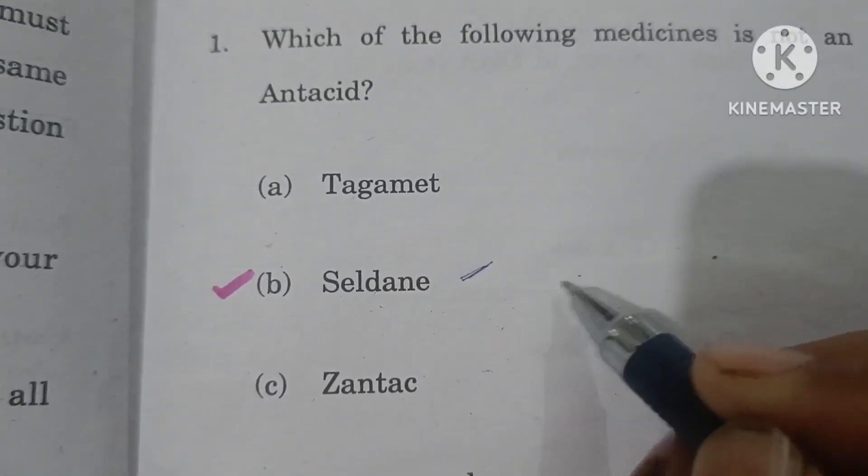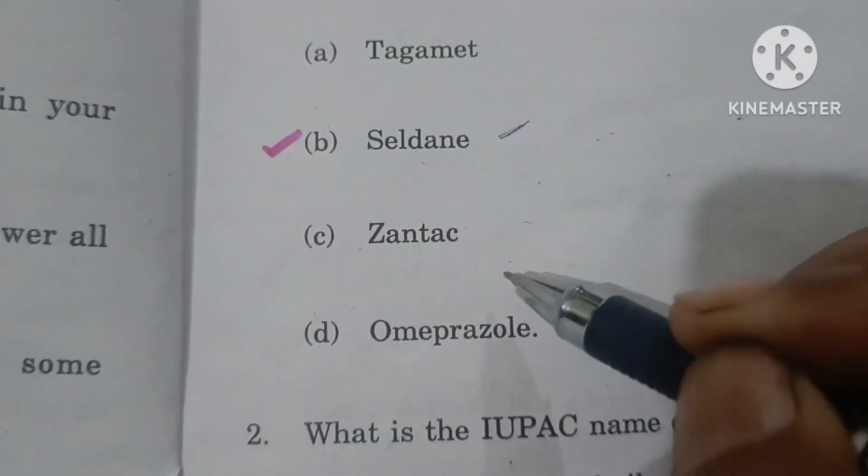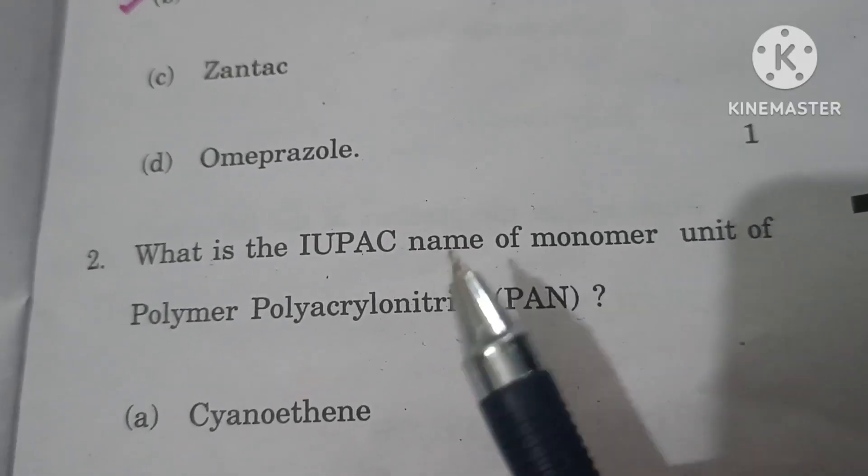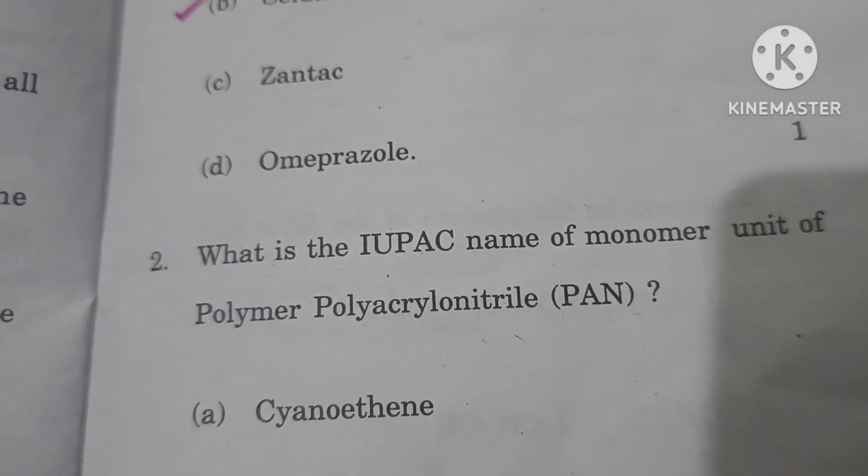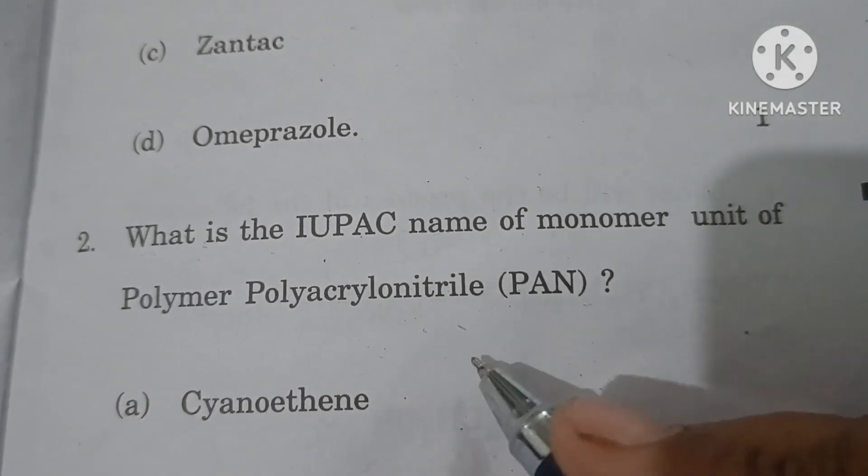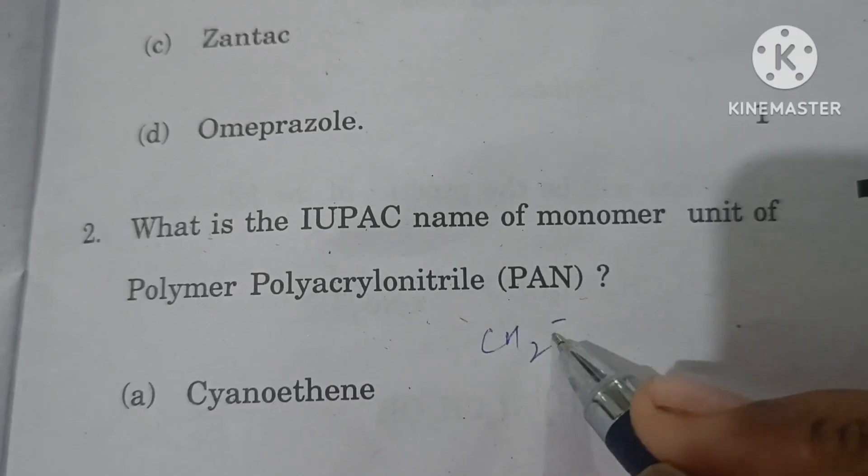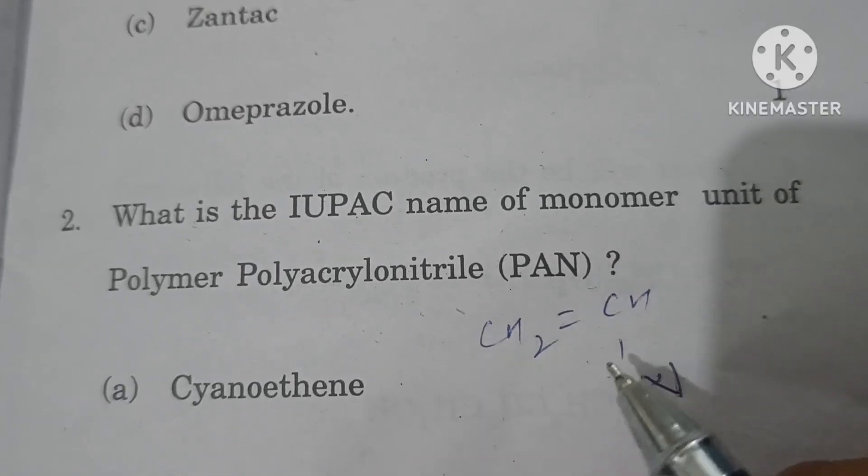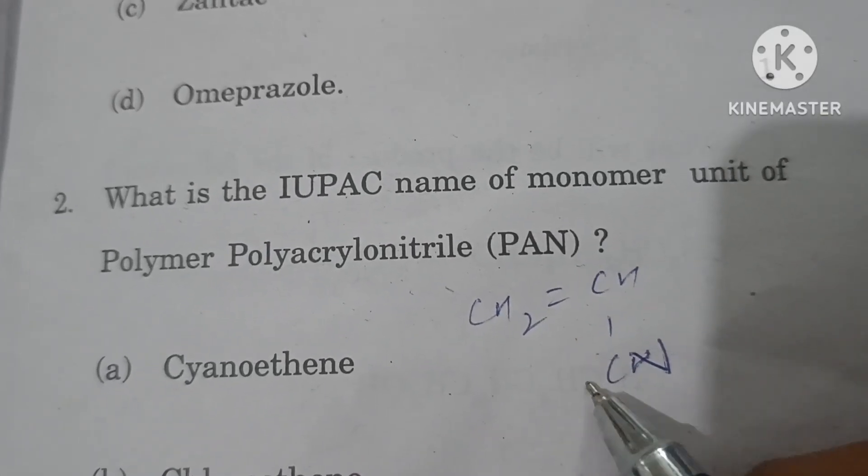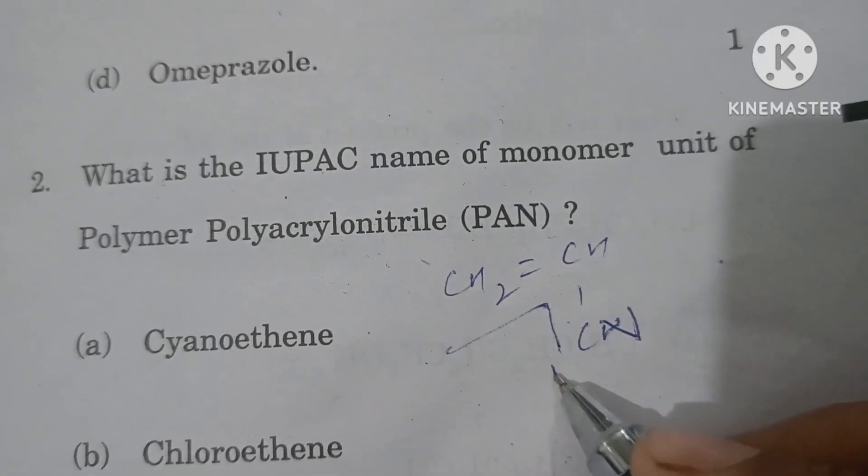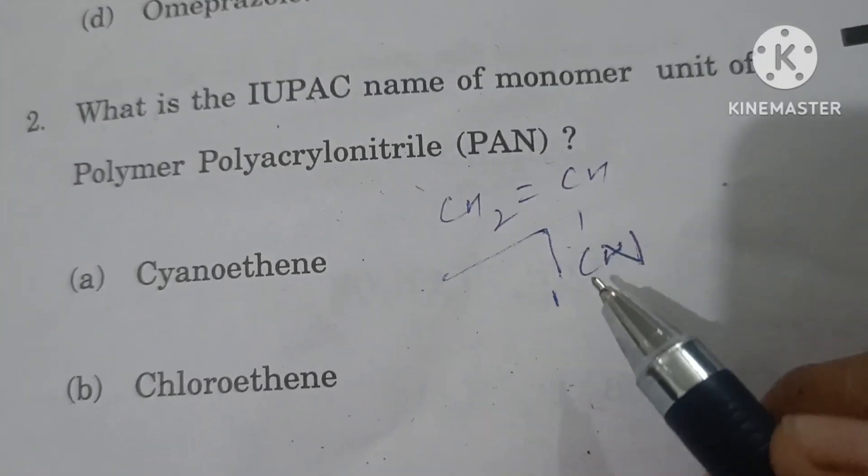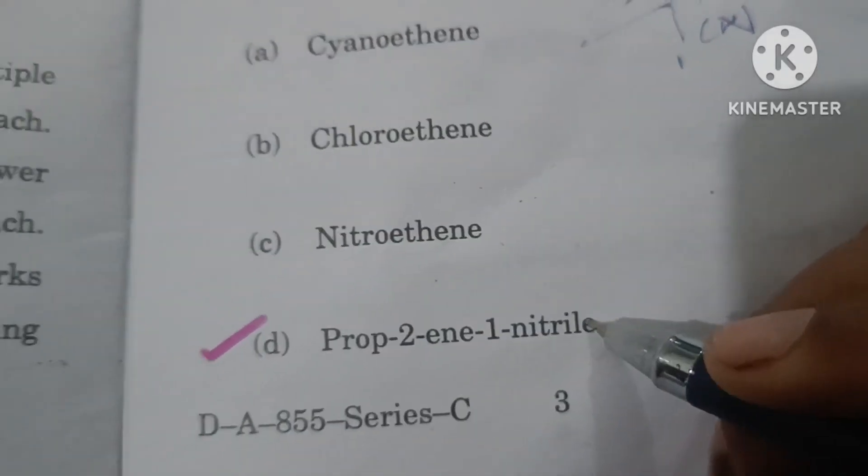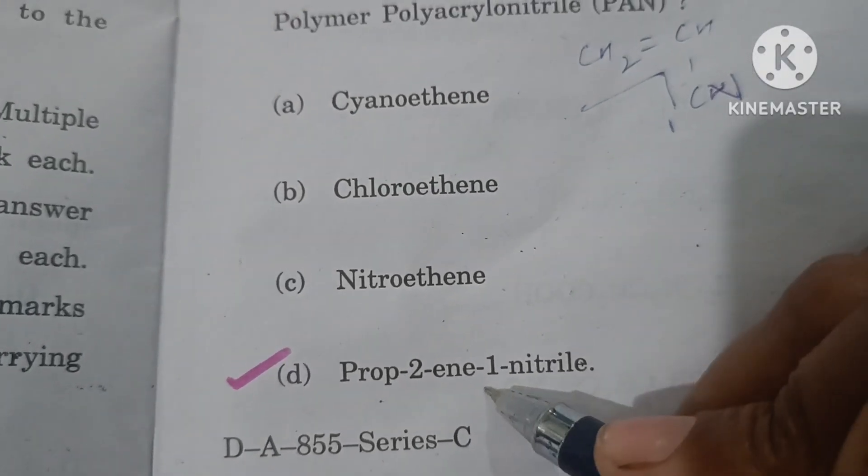What is the IUPAC name of the monomer unit of polymer polyacrylonitrile? The polymer polyacrylonitrile is formed from this compound's polymerization. This is the monomer with a three-carbon chain. We start numbering from here, so this is prop-2-en-1-nitrile. This should be the IUPAC name.